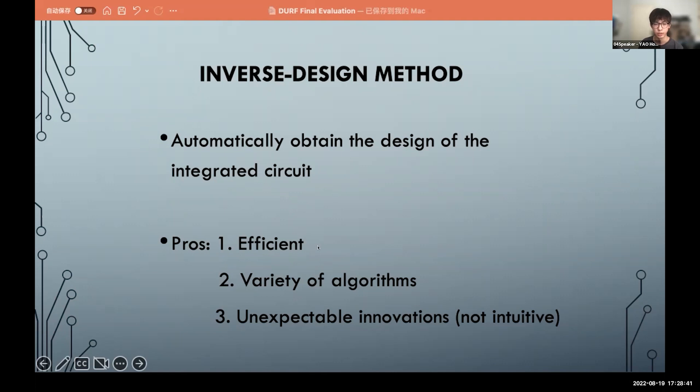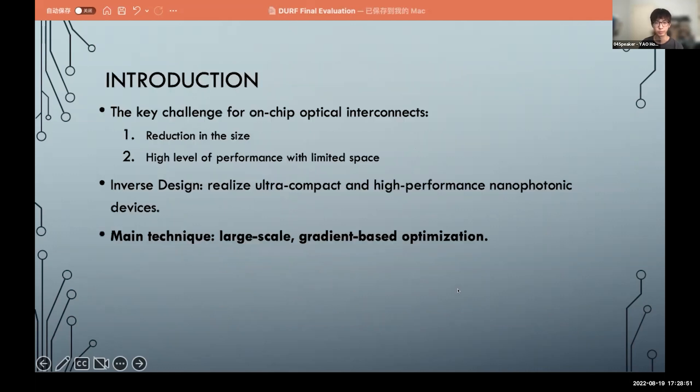And it is very efficient. Also there are a lot of algorithms we can use and sometimes it will occur some unexpectable innovation results. The main technology of inverse design is large-scale gradient-based optimization. But in this optimization, the main problem is that when the scale is too large, we need to calculate a lot of gradients, and each gradient is a simulation. It means that if we have hundreds of points, we have hundreds of simulations. It takes a lot of time and calculations.